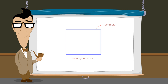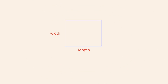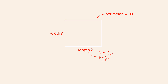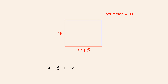Now let's try an example involving the perimeter of a rectangular room. We are told that the length of a rectangular room is five feet longer than its width. If we know that the perimeter of the room is ninety feet, then what are its length and width? Since we want to find the room's length and width, we can assign the unknown variable to either of these quantities. Let's let the variable w represent the width of the room. Since the length is five feet longer than its width, the length is w plus five. Adding the lengths of the four sides, we get w plus five plus w plus w plus five plus w, which must equal the perimeter, ninety feet.